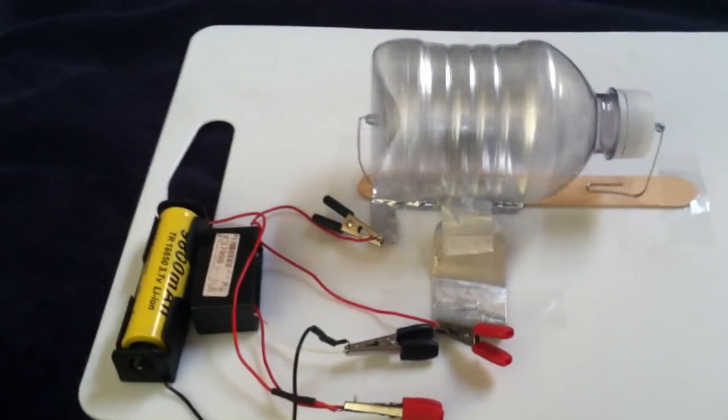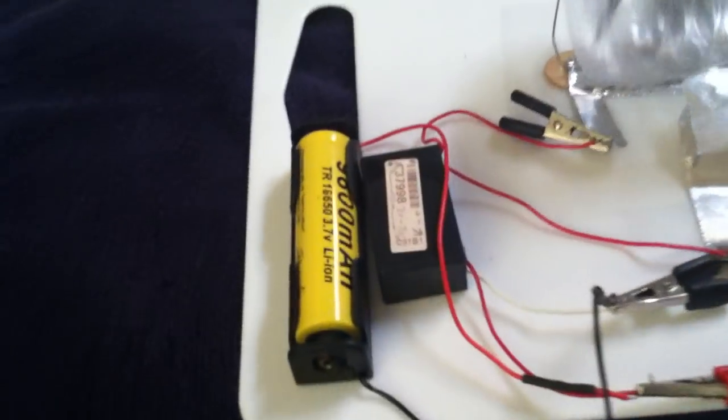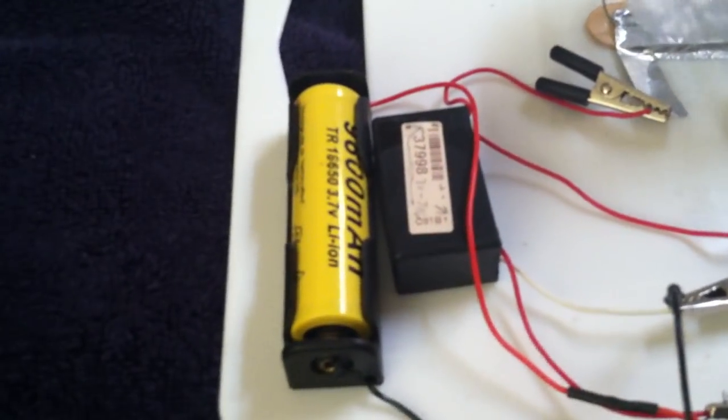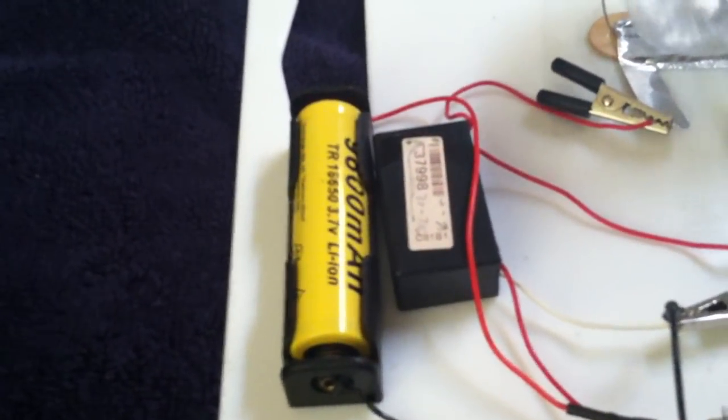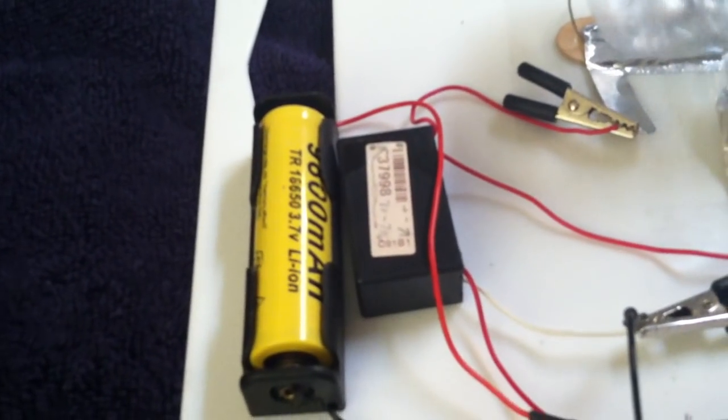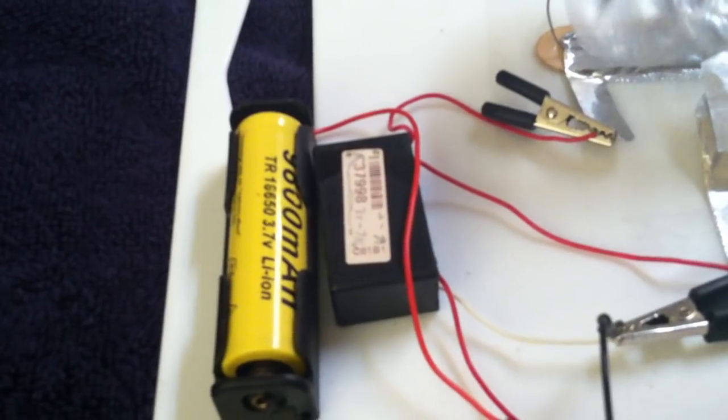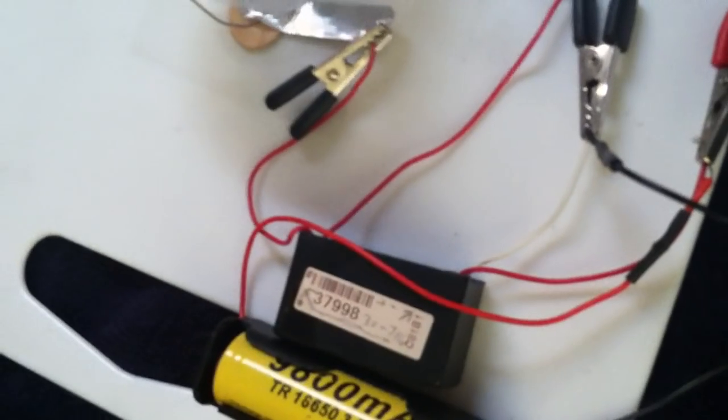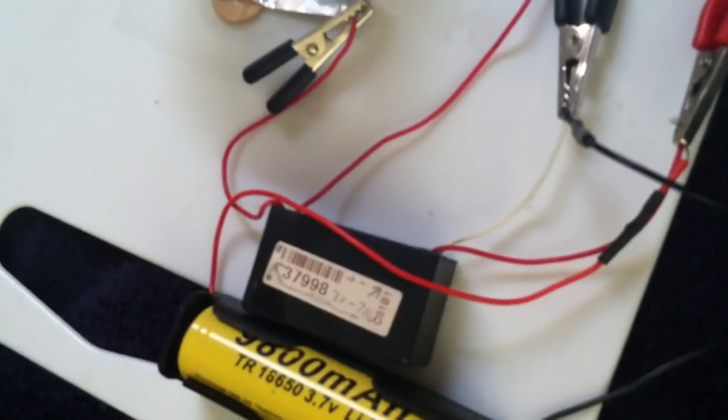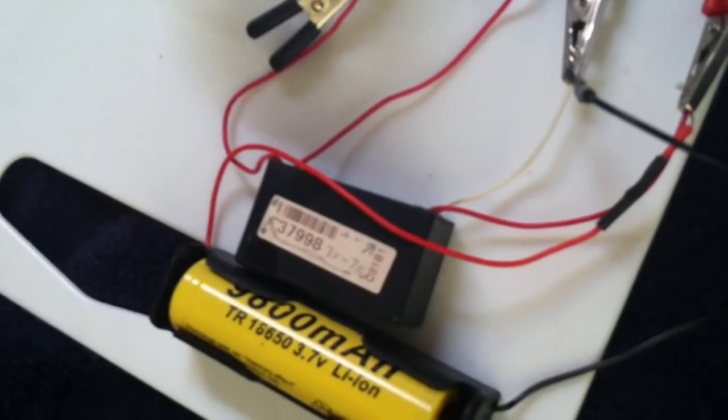You know what, that thing runs darn good. I'm using a 3.7 volt lithium battery, one of those 18650 batteries, to drive a 7kv high voltage generator. I got it on eBay, it was real cheap, and the thing is just hot wired right to the setup.